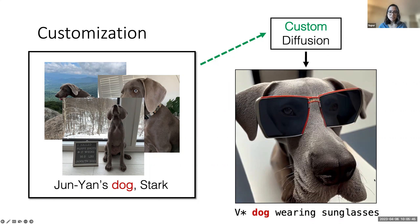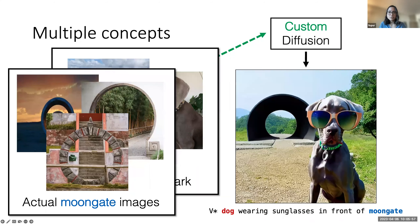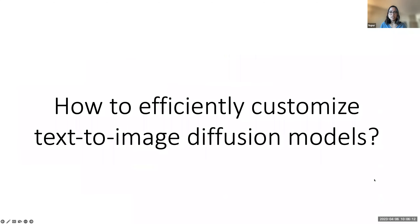Basically, we want to be able to augment the pre-trained model with these new concepts, so that it generalizes and can create new variations of the concept, like wearing sunglasses. And even more so, we want to be able to combine multiple new concepts. Like if I want our pet dog image in front of this new concept Moongate, the model should be able to do that. So how do we efficiently customize these large-scale text-to-image models?